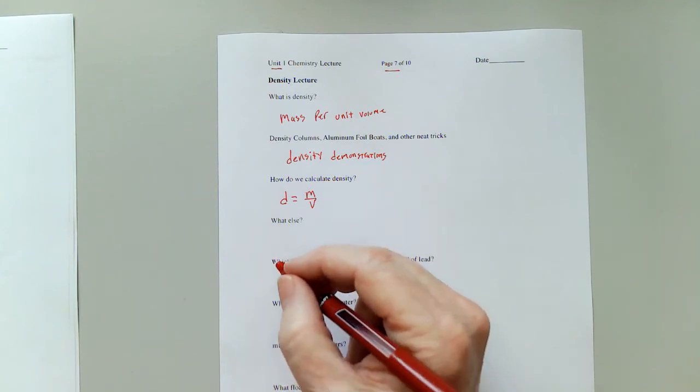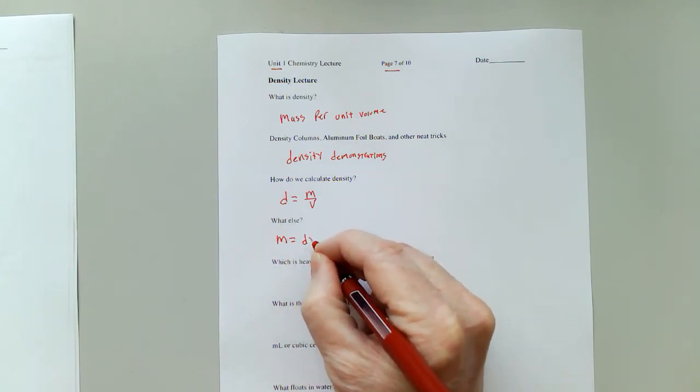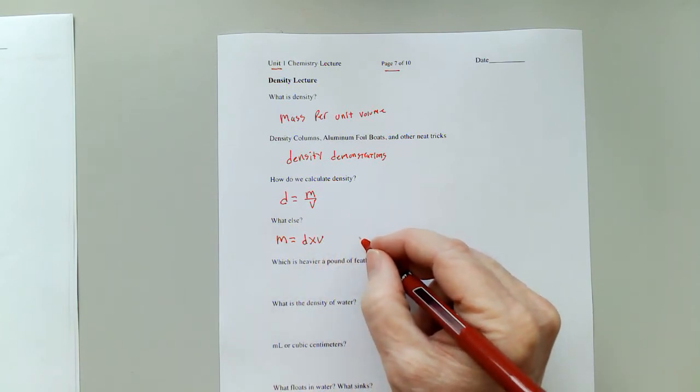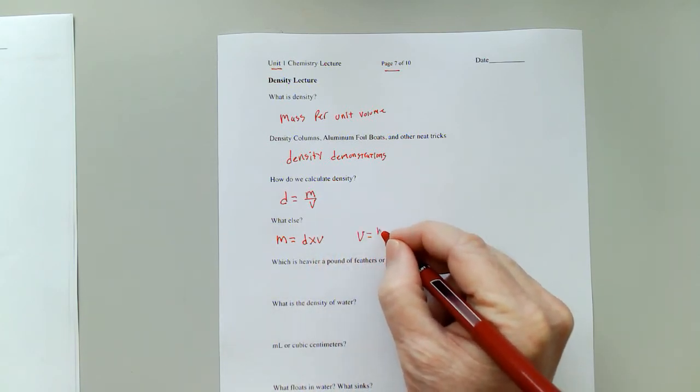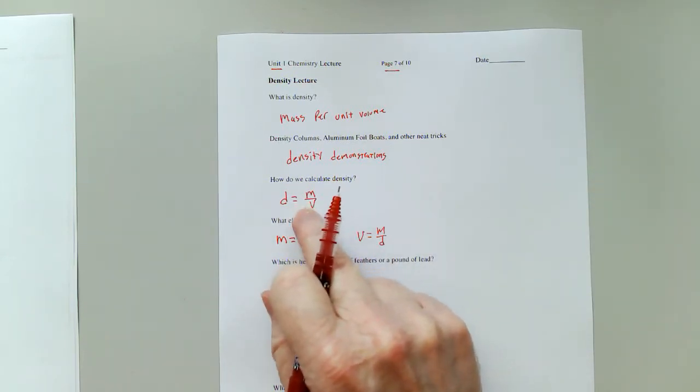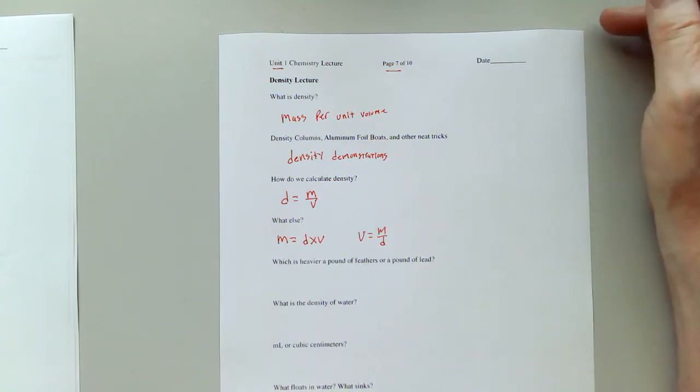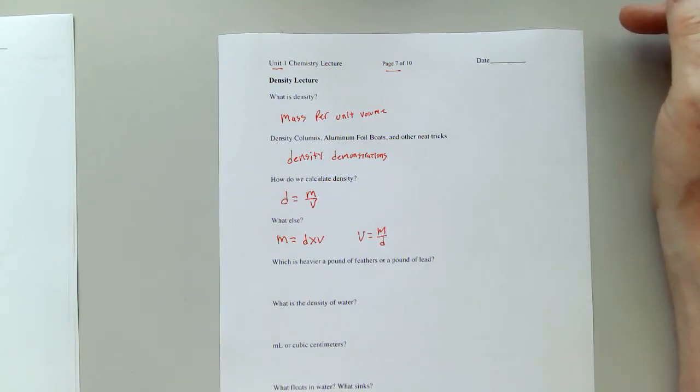So if that's the formula, we can also say that mass is equal to density times volume, and volume equals mass divided by density. I don't want you to go and start memorizing these. You can solve for them algebraically. You've learned algebra, you passed your algebra class. Let's use that skill now.